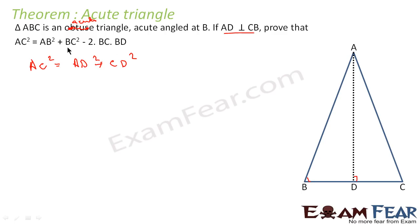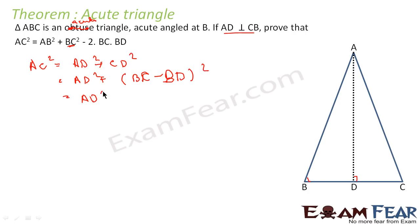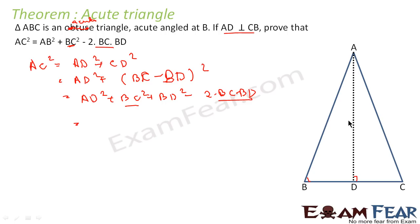We note that CD = BC − BD, since BC is the full side and D lies between B and C for the acute case. So AC² = AD² + (BC − BD)². This becomes AD² + BC² + BD² − 2·BC·BD. And AD² + BD² can be written as AB².